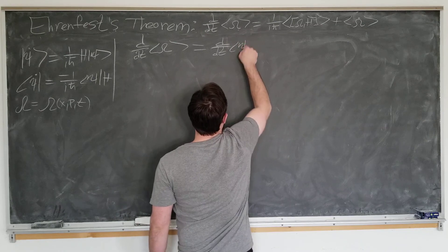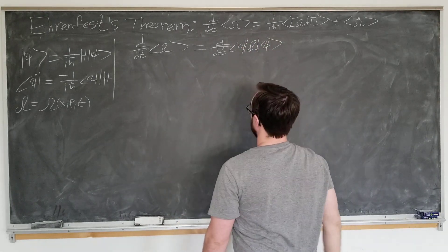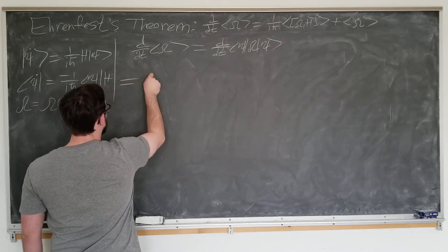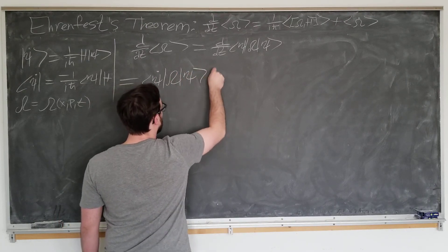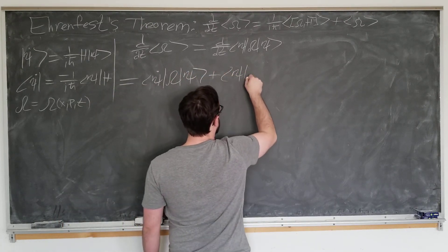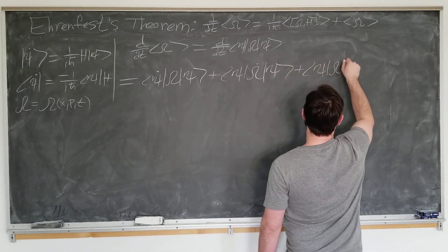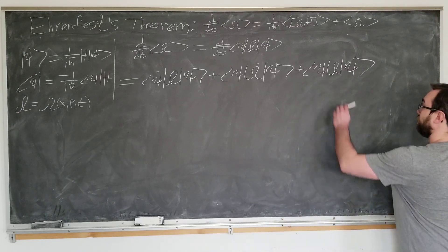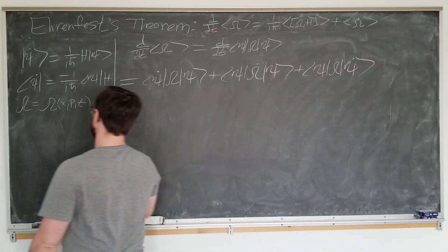psi omega psi, and now we'll use the product rule to simplify this. psi dot omega psi plus psi omega dot psi plus psi omega psi dot. We will write the terms in this order, just for clarity.